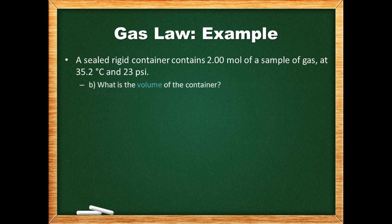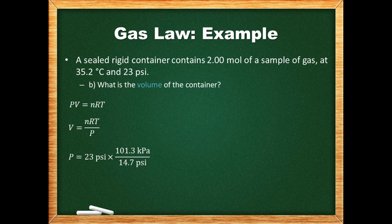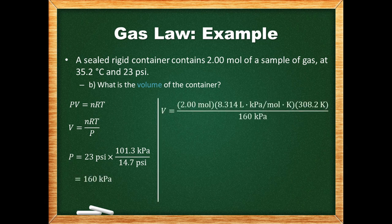Next we are asked to determine the volume of the container. Since we're given a set of pressure, moles, and temperature, it makes sense to use the ideal gas equation to determine the volume. We'll assume the ideal gas constant was not given to us in terms of psi, so we could either convert the ideal gas constant or convert the pressure into a different unit — which is probably the simpler option. We then plug these four values into the equation and solve for volume.